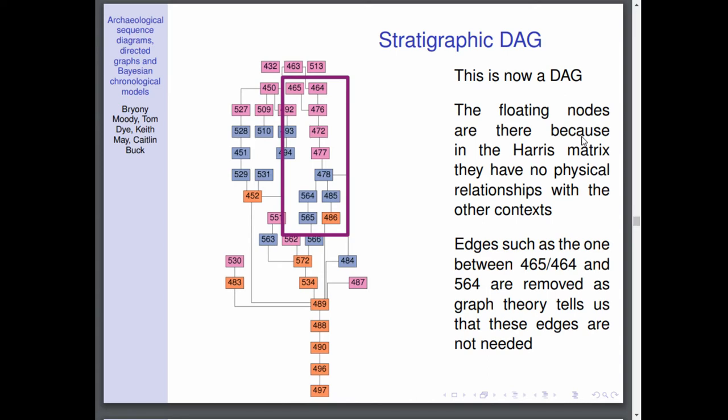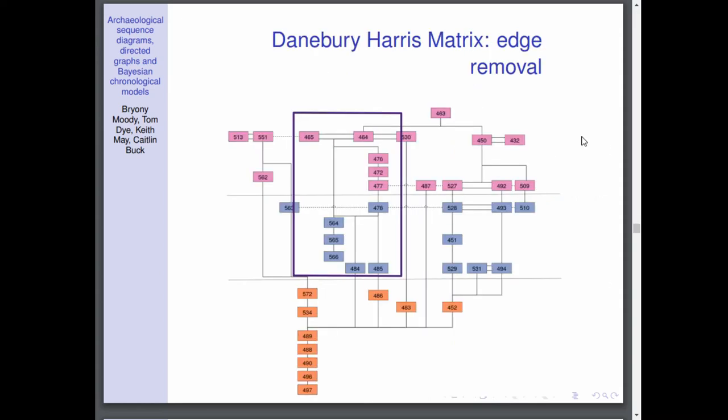As well as this, it's removed some edges. So you can see here that 465 and 464 only have edges going to 476. This is because if we look in the matrix, we've got 465 and 464 and it has an edge going down to 564, but it also has an edge going over to 476.